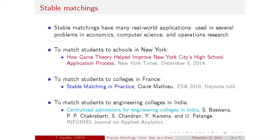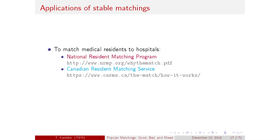It's been used to match students to colleges — Claire Matthew had a keynote talk on this at last year's ESSA, and it's used in New York. This has been one of the primary applications of stable matchings in the real world, alongside matching medical residents to hospitals, which has been used in the US and Canada. In all these applications, we want a large matching — we want to match as many students as possible to colleges, universities, and as many medical residents as possible to hospitals.